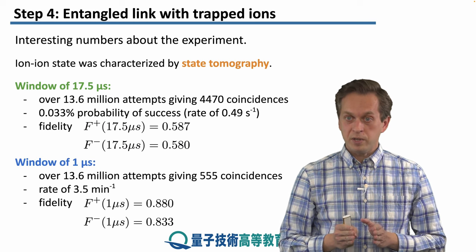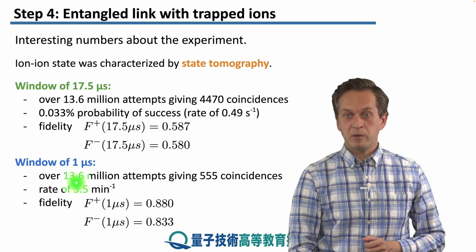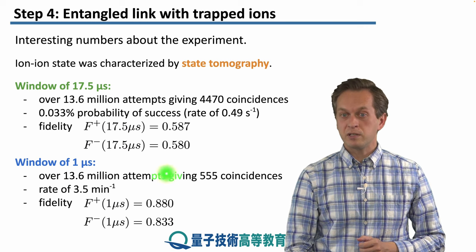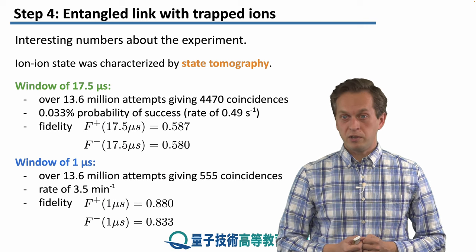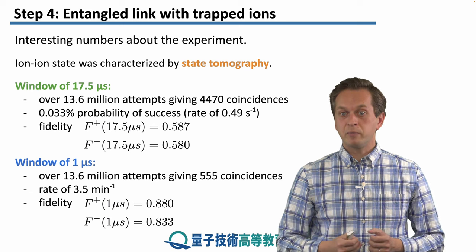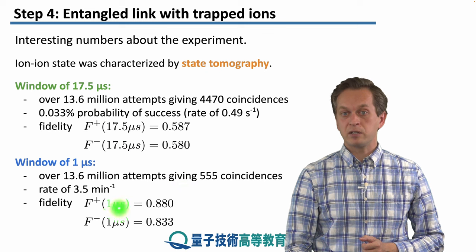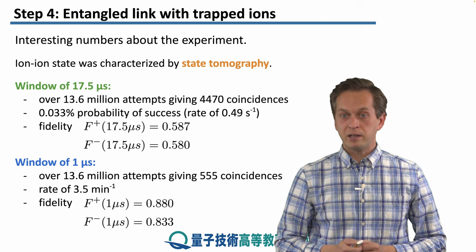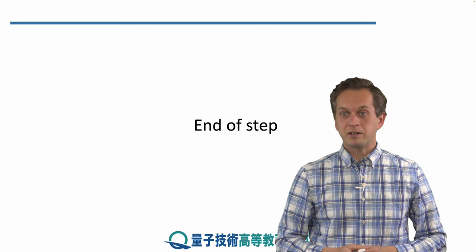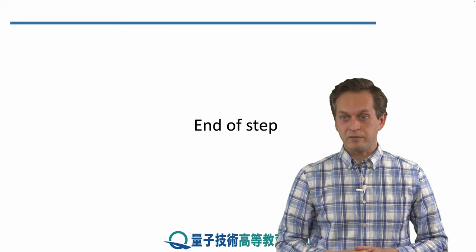When the BSA window was decreased to just 1 microsecond, the same number of attempts resulted in a much lower coincidence count of 555, lowering the entanglement generation rate to 3.5 pairs per minute. On the other hand, the fidelities increased substantially: the F-plus fidelity jumped to 0.88, while the F-minus fidelity jumped to 0.833. This concludes our discussion of using trapped ions in cavities to establish link-level entanglement.